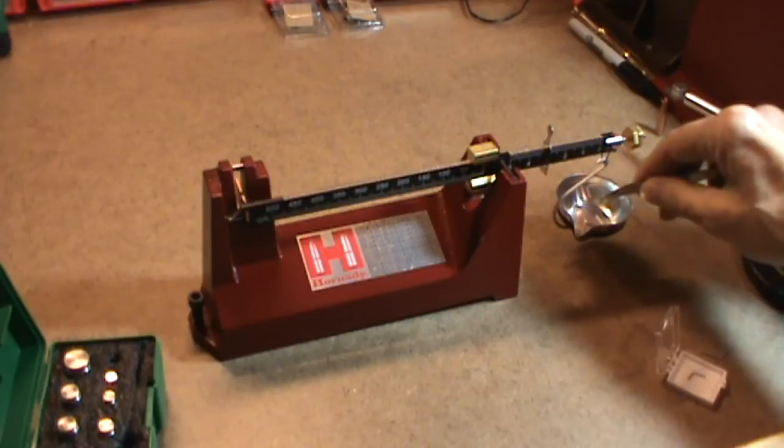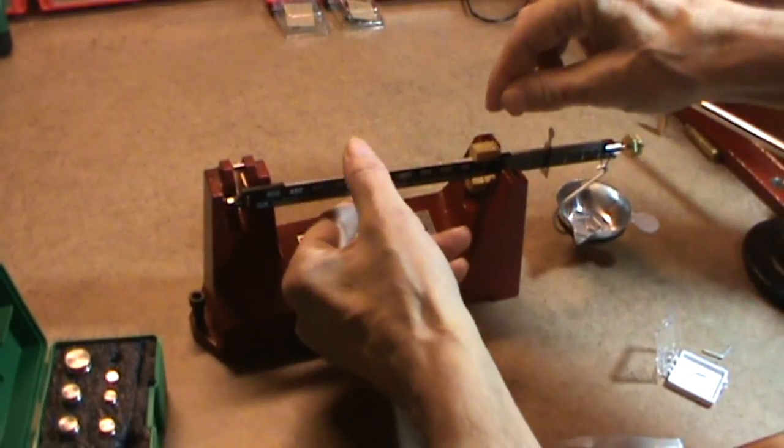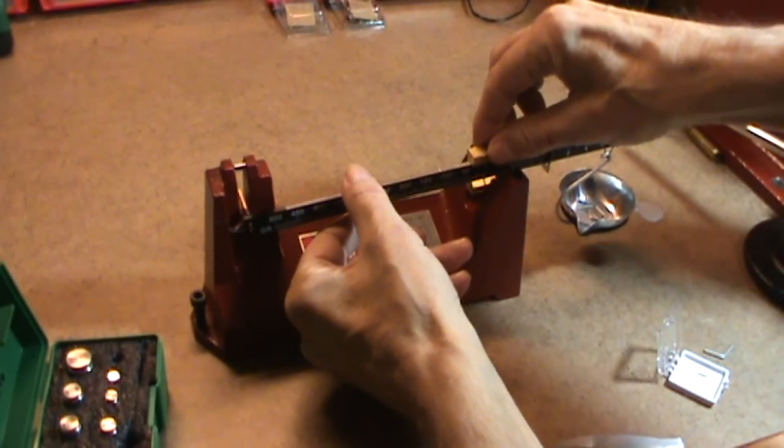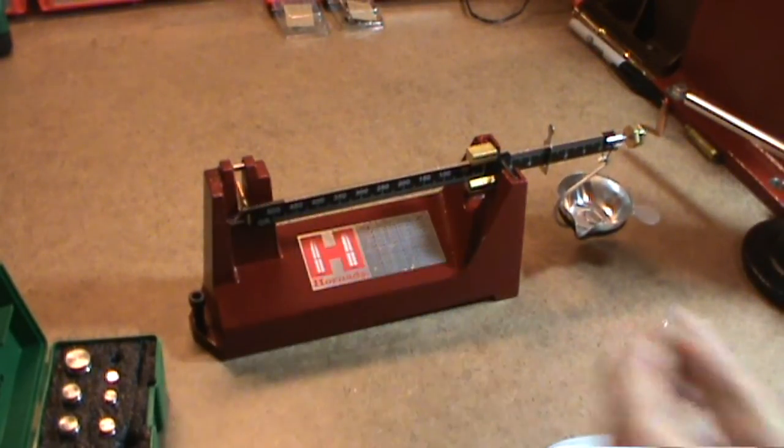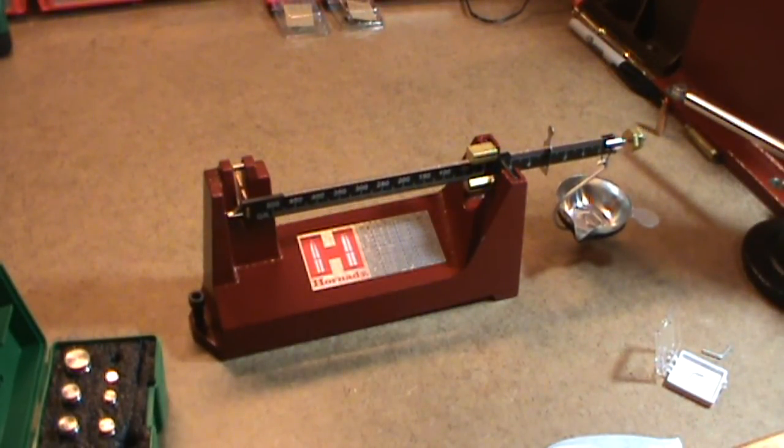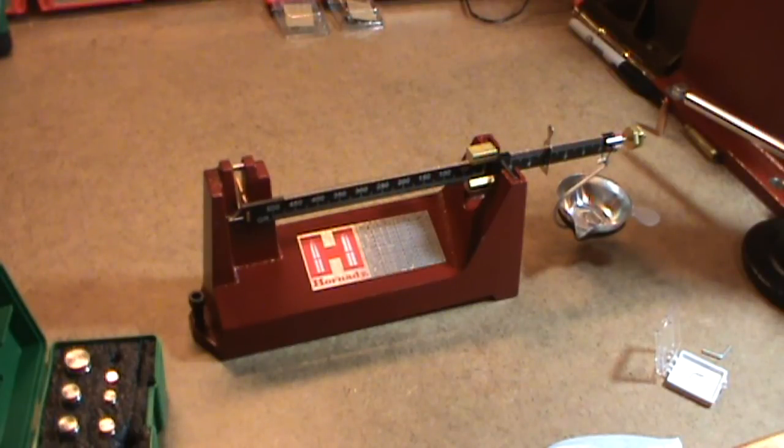Let me add five more grains. I'm going to use the larger poises to go to five. I'll leave that at three for a total of eight. And it's right on.